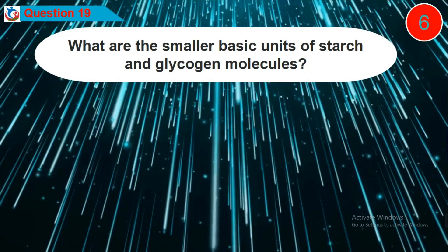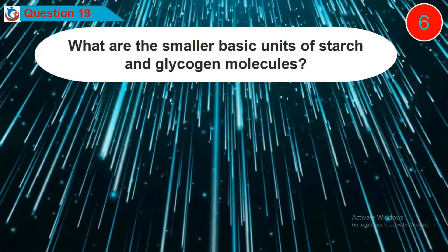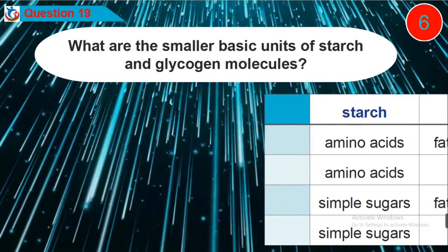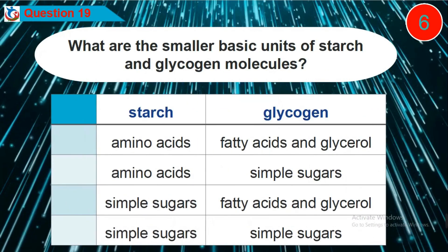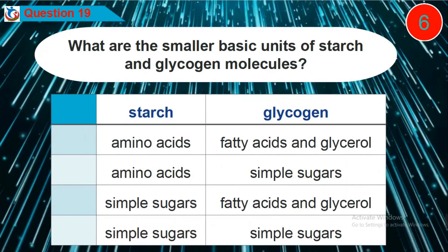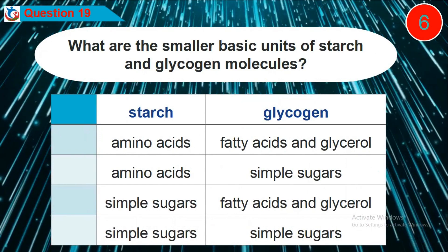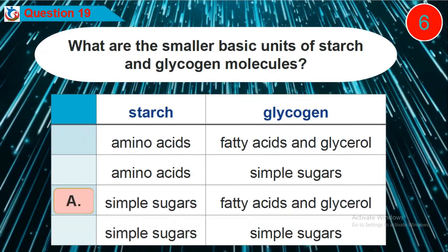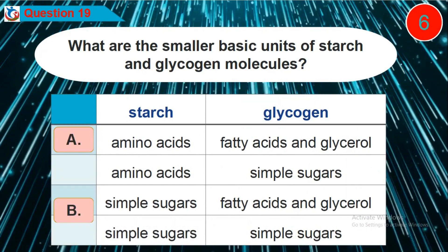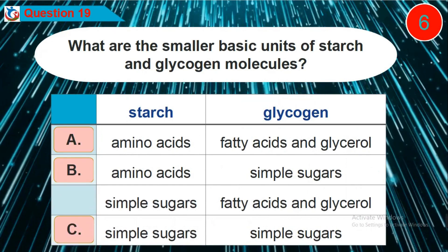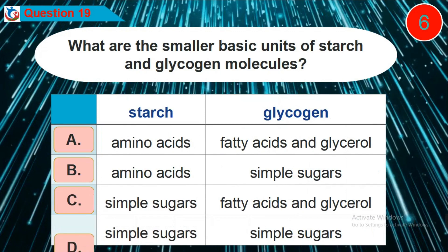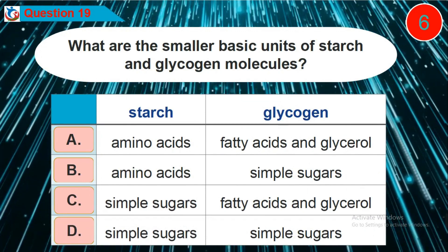Question 19: What are the smaller basic units of starch and glycogen molecules? Is it option A, B, C, or D?